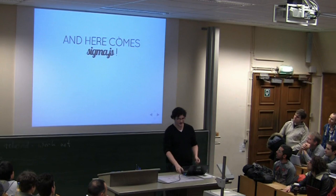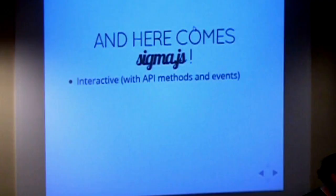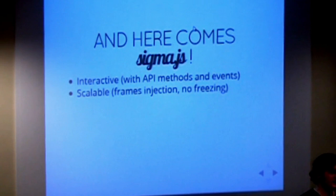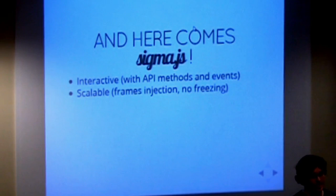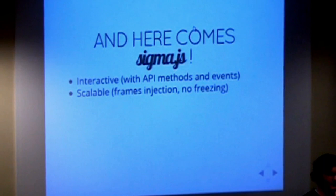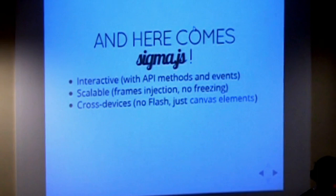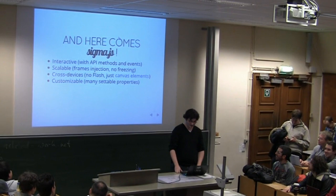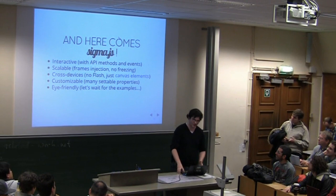Here comes Sigma.js. It's interactive — you have API methods to give it orders and it can send events, so you can bind things on clicking nodes, as you'll see later. It's scalable: the main point of Sigma.js is that it injects frames during the graph drawing process. So even with big graphs, it will take a while to draw fully, but it won't freeze the browser the way some other tools do. Cross-device — no Flash, just using the canvas element. Customizable, UI-friendly, and open source, released under the MIT license.